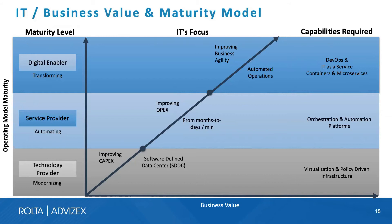The digital enabler level is the highest maturity level for an IT organization. Here, you fully master orchestration and automation and can help the business transform as changes happen in the business climate, enabling business agility and automated operations — pre-programming the operational management of the environment. At this level, the focus is on agile concepts like DevOps, IT as a service, and at the application layer, deploying containers and microservices.